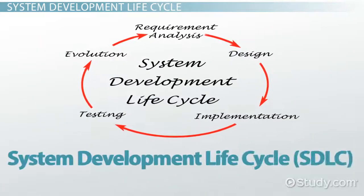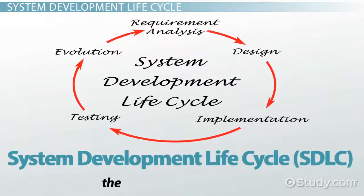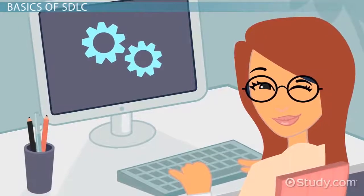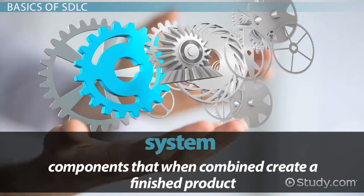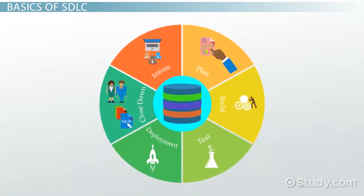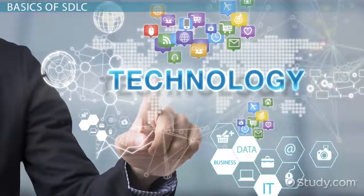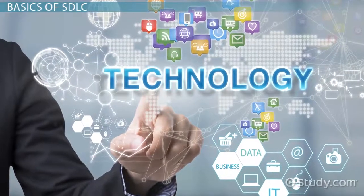This is what Marge learned about the System Development Life Cycle, which is the creation of a new system. A system is a combination of components that, when combined, create a finished product. The System Development Life Cycle, therefore, is the term used to describe a six-phase process, which are the components that are combined to create a new information technology system, which is the finished product.